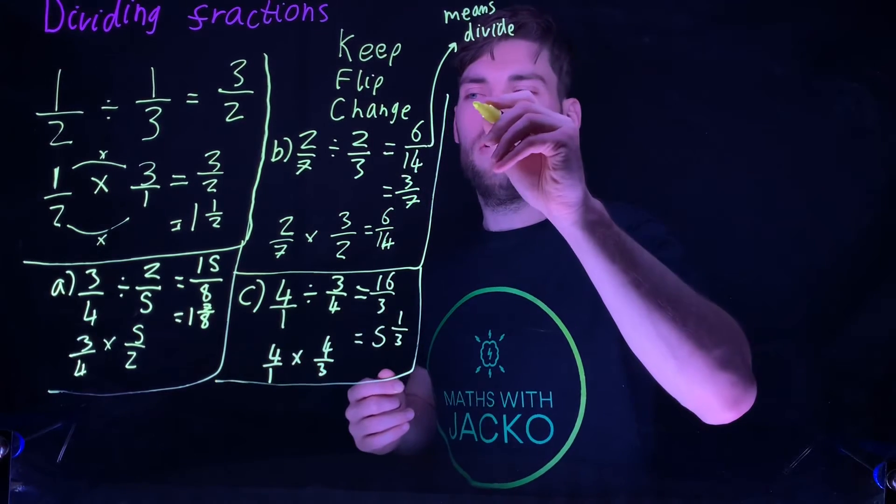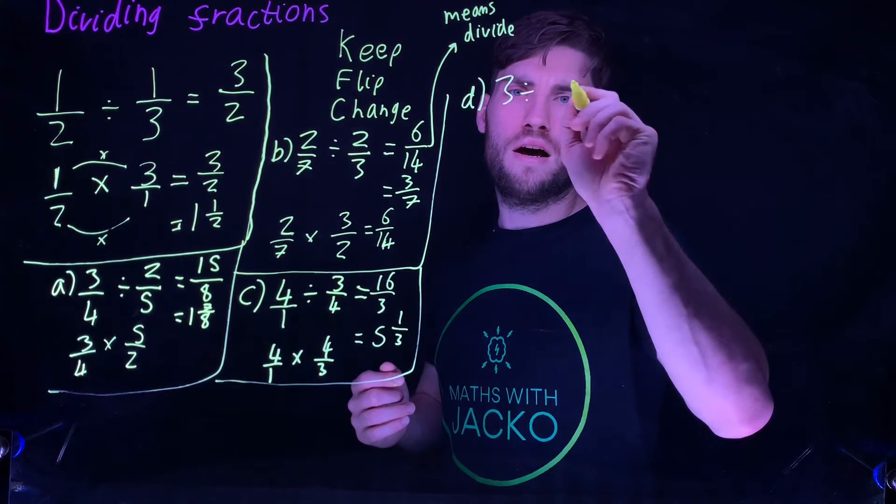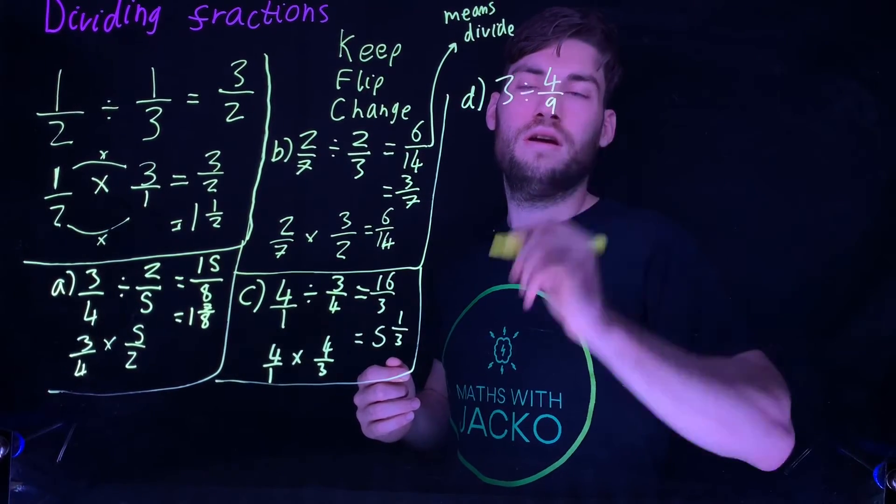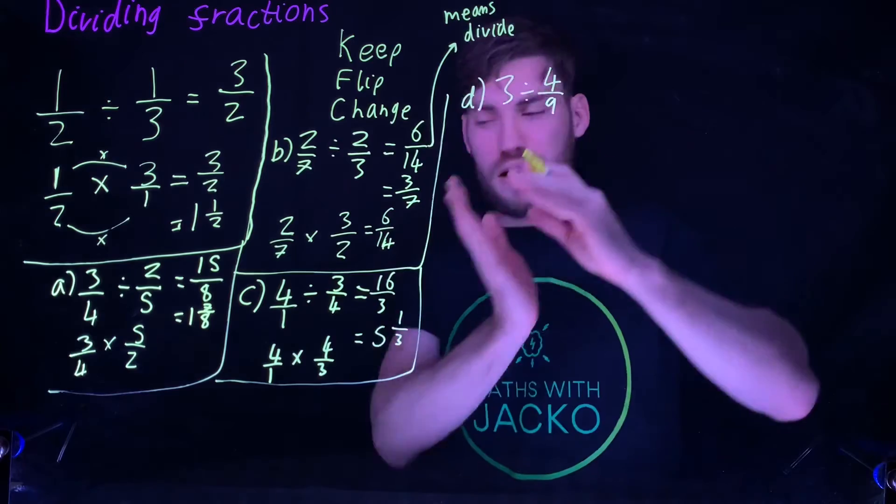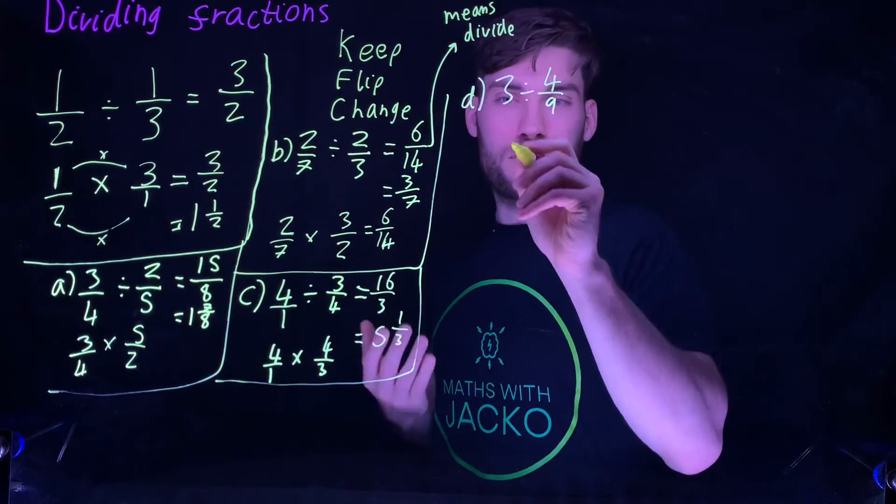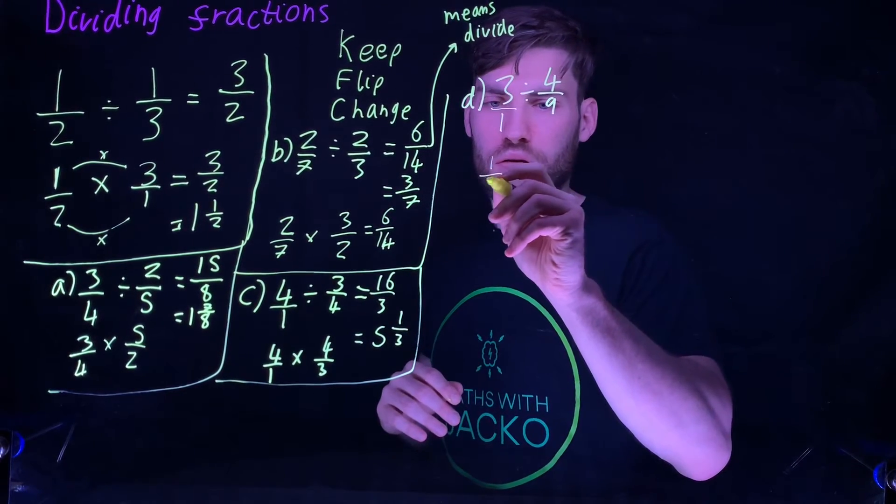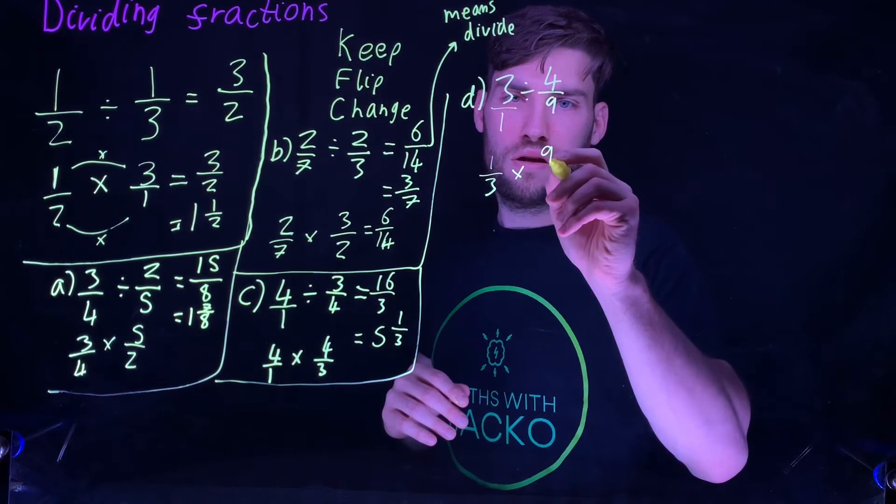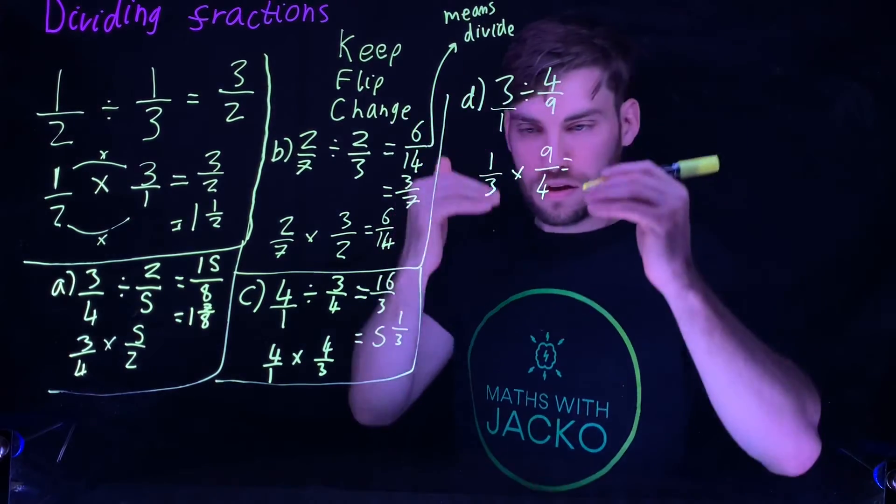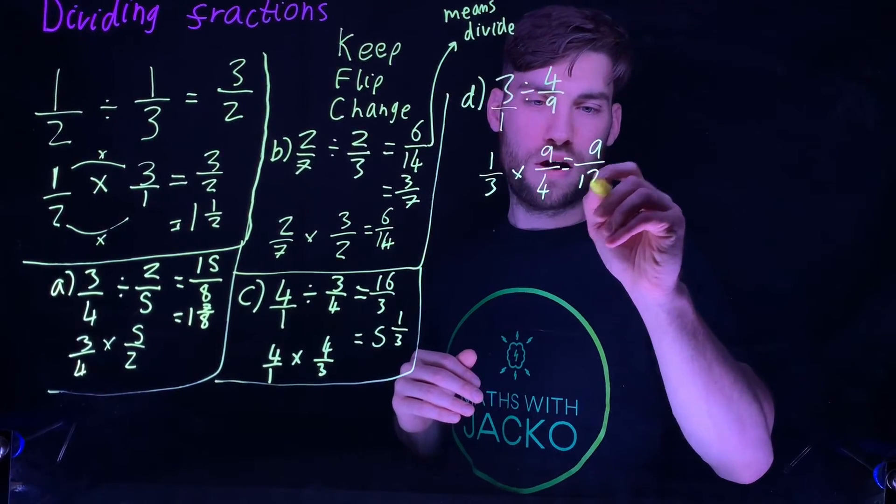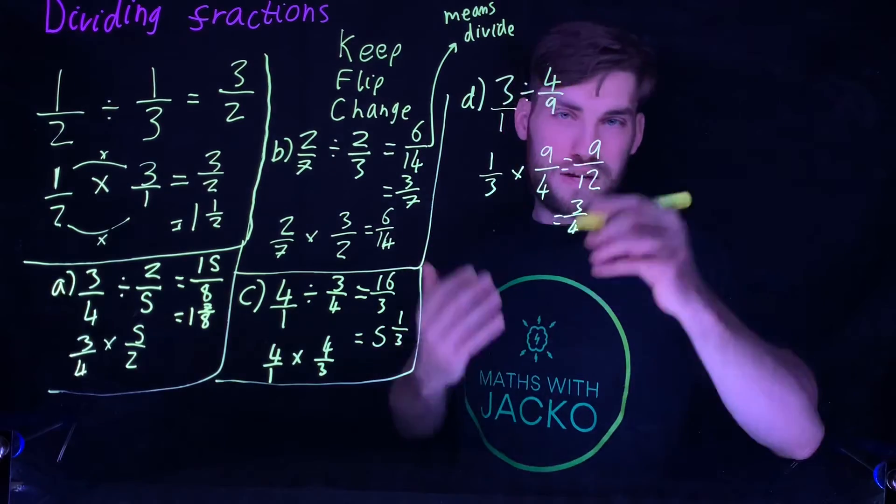Pause the video and have a go at this one. Three divided by four ninths. Change that to three over one, and do Keep, Flip, Change. It'll be three over one times nine over four. Multiplying fractions, multiply numerators, multiply denominators. Nine over twelve, which simplifies to three quarters.